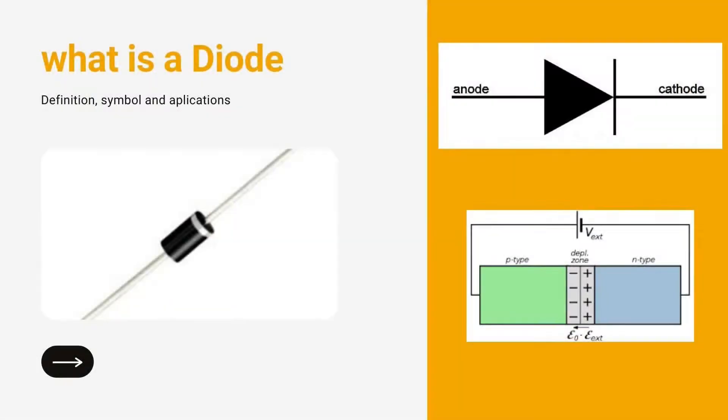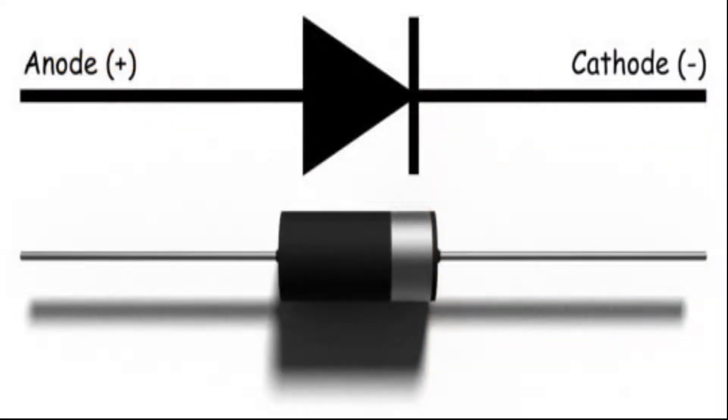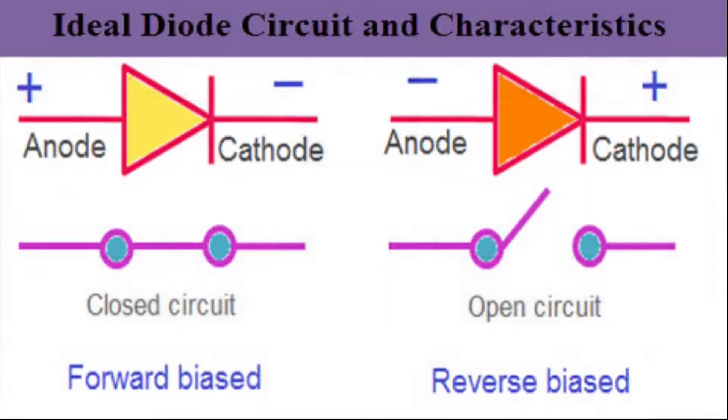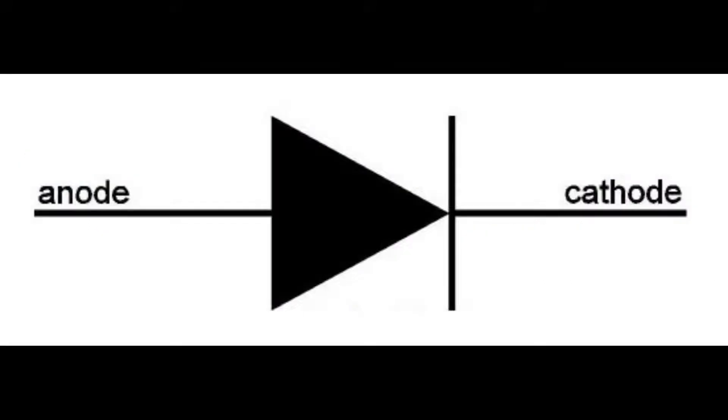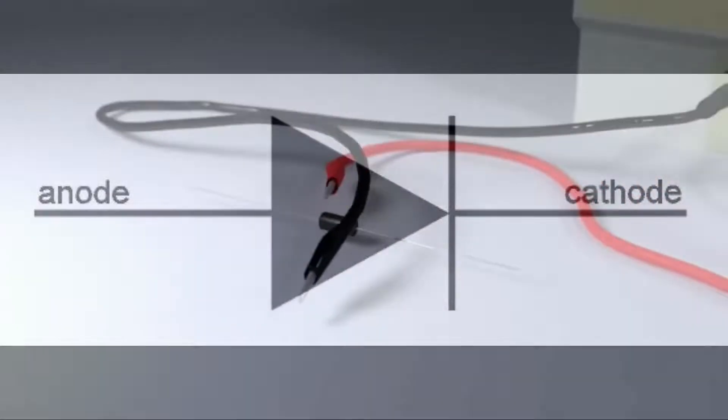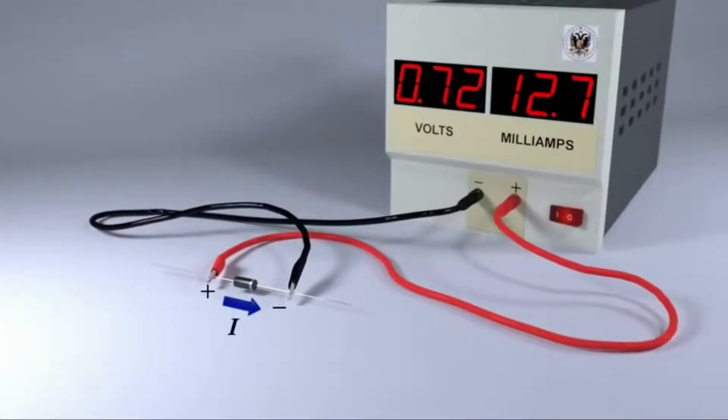A diode is two terminal electronic component that functions as a one-way switch. They allow current to flow only in one direction. The two terminals of the diode are known as anode and cathode. The operation of diode can be classified in two ways.